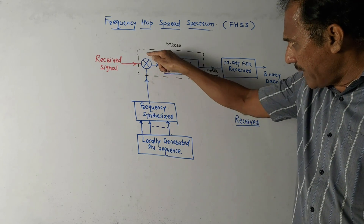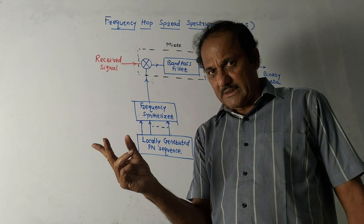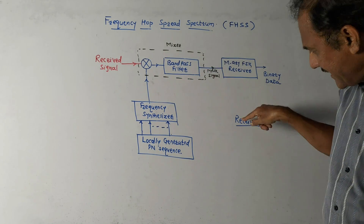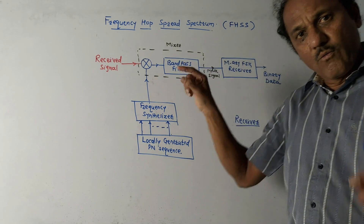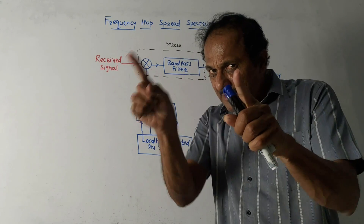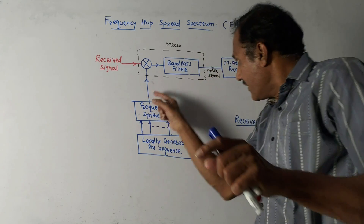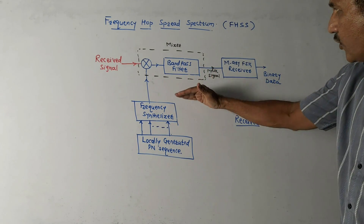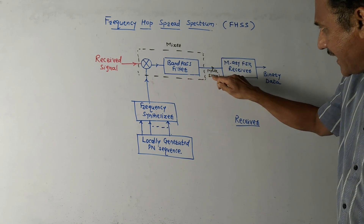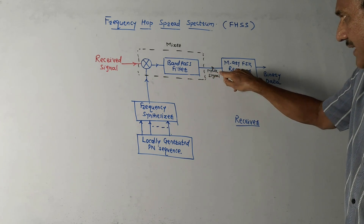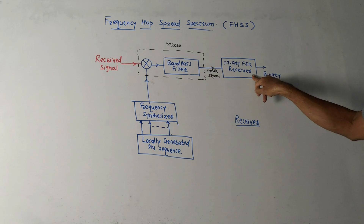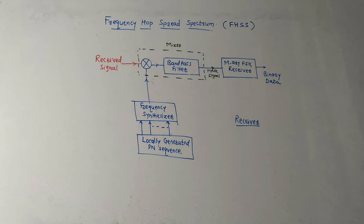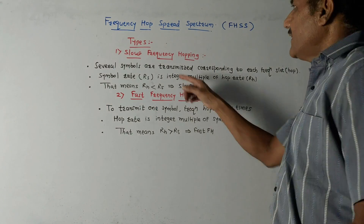The multiplier produces two components: the summation of frequencies and the difference of frequencies. The bandpass filter at the receiver side is designed to pass only the difference frequencies. This means the bandpass filter eliminates the effect of frequency hops. The output of the bandpass filter is a pure MFSK signal, which is then applied to the MFSK receiver — a non-coherent demodulator — whose output is the recovered binary data sequence.